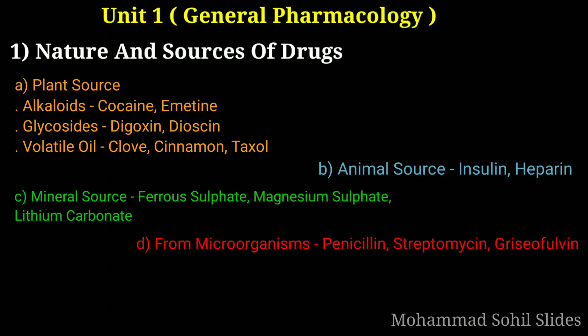Now first is plant source. In plant source, there are various types of drugs. First is alkaloids — cocaine and emetine are there. Then second, glycosides — digoxin and digitoxin are there. Then third is volatile oils — clove, cinnamon, and taxol are there. So these are the plant sources.